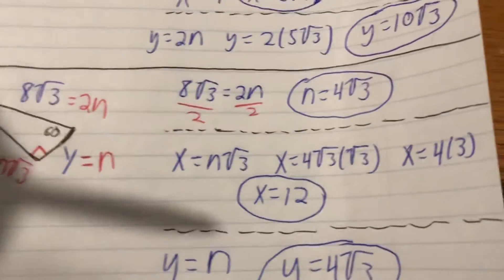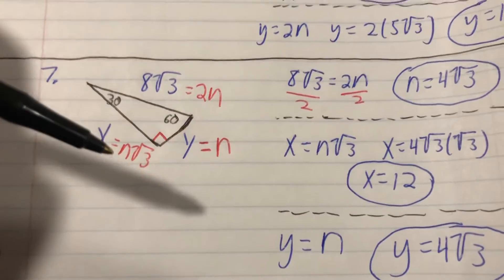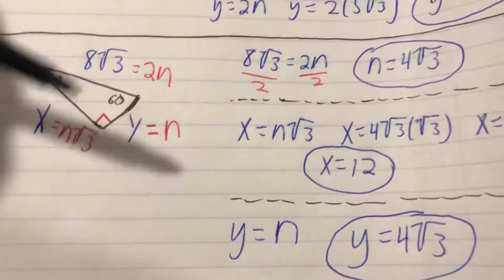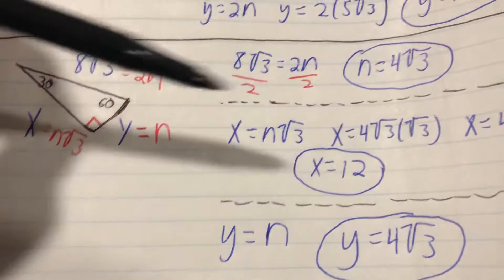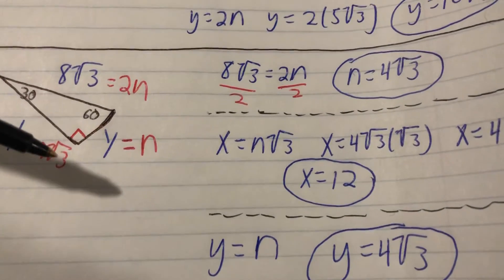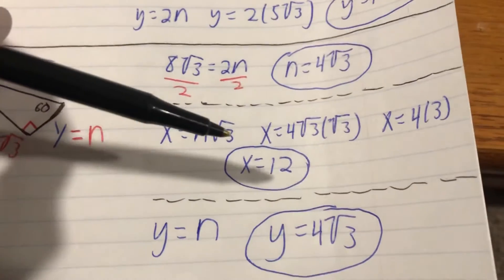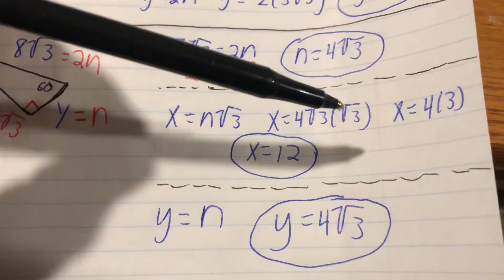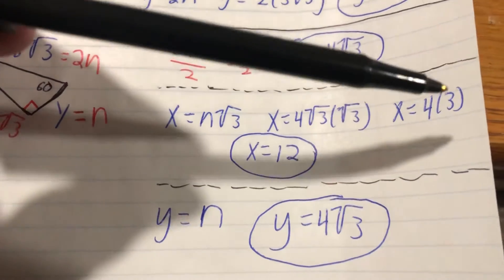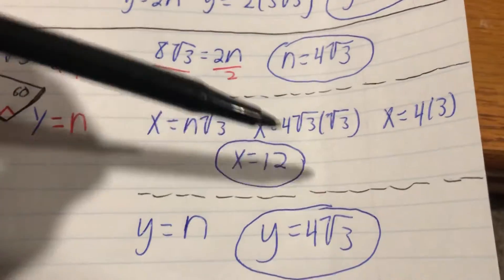Now that we have n, we can plug that in accordingly. x equals n√3, so remember √3 is going to come up twice here because n has √3 in it already, and then we're taking n and multiplying by √3. So x equals 4√3 times √3. √3 times √3 is 3, 4 times 3 is 12, x equals 12.